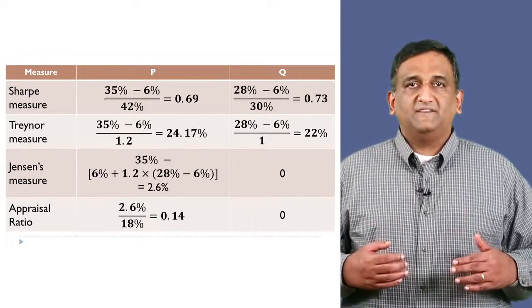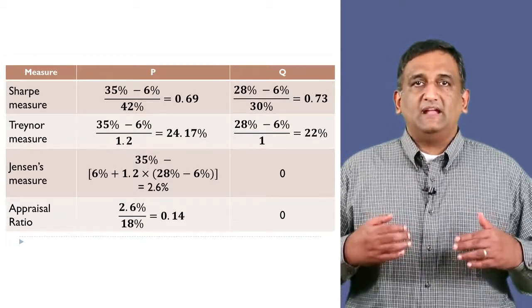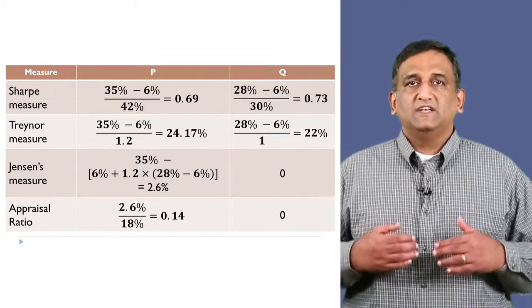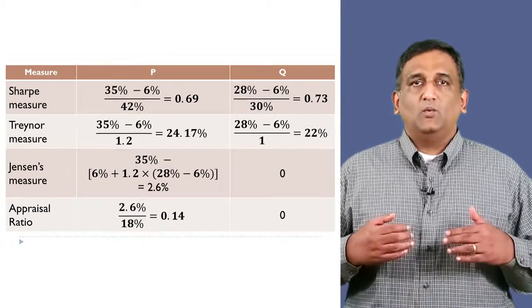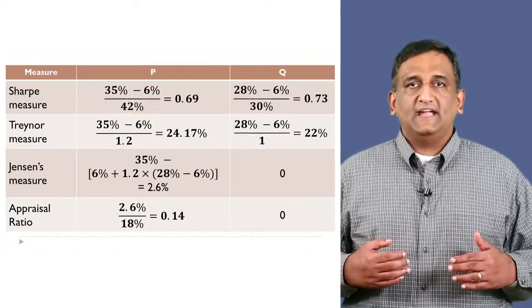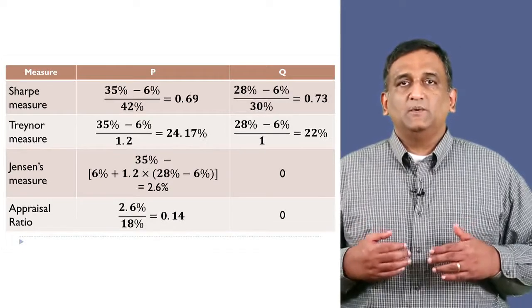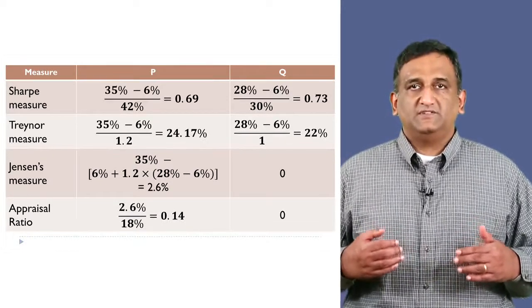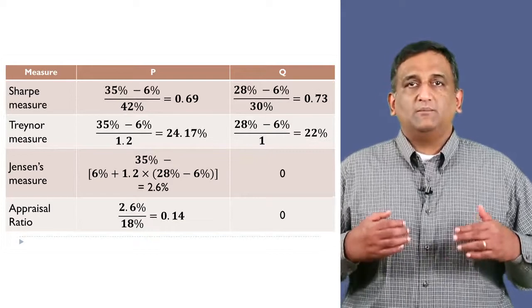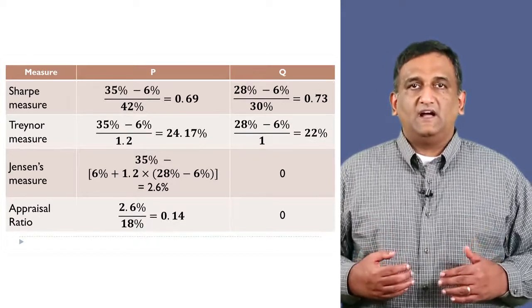P's alpha is 35% minus 6% plus 1.2 times (28% minus 6%), which comes out to 2.6%. Since Q is the market portfolio, its alpha will be 0.